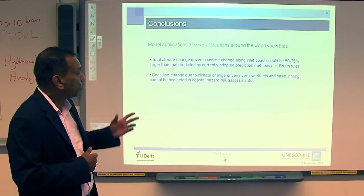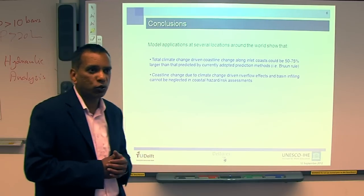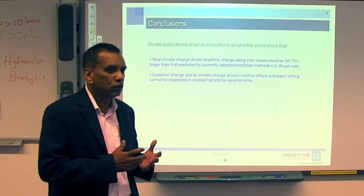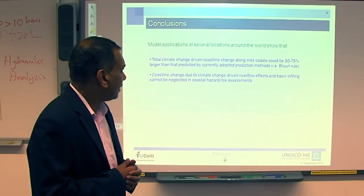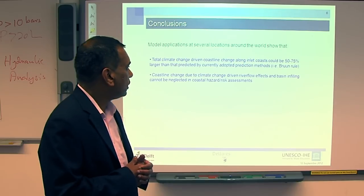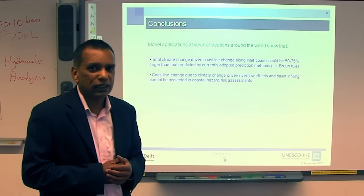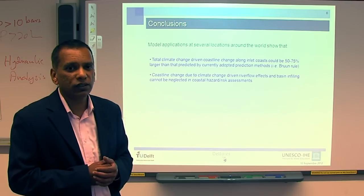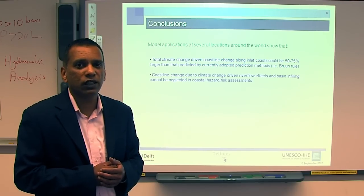In our study, we applied this model to several locations around the world — several from Australia and also in Asia. Our results show that climate change-driven coastline recession is underpredicted by about 50 to 75% if presently used methods are applied. This is mainly because those methods do not account for climate change-driven changes in river flow and the basin infilling effect. We conclude that these effects should not be neglected in future studies. These results are published; if you have any questions or comments, please contact me via my email address on the UNESCO-IHE website. Thank you.